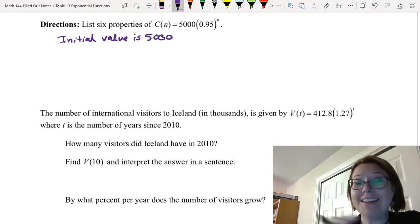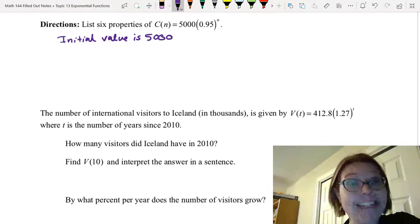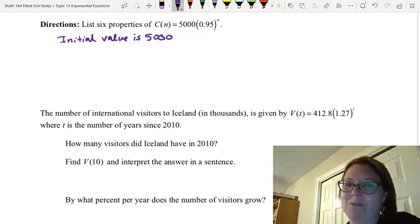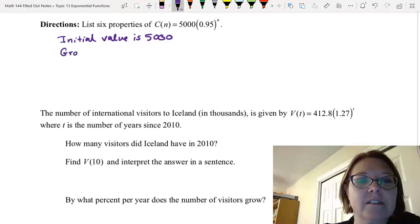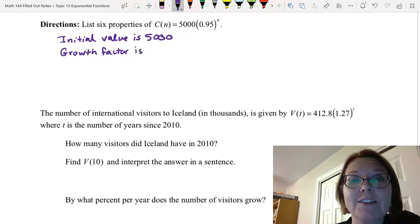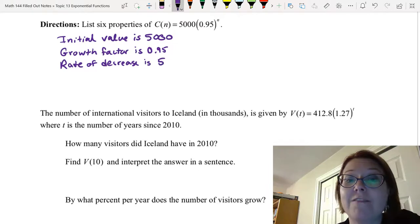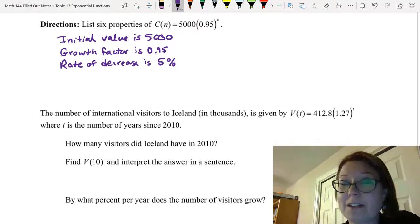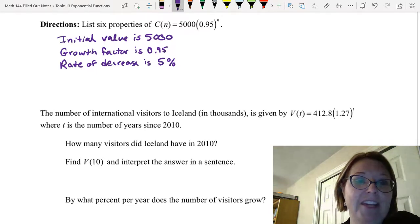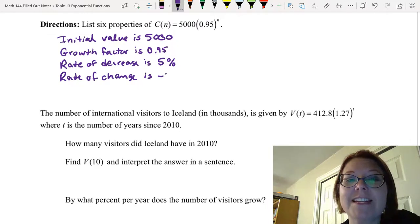So let's start with this. The initial value is 5000. Now, you don't want to just say a = 5000 because you haven't defined what a is. So you do need to say the initial value is 5000. What else do we know? Well, we know the growth factor. And again, we'll write that out. The growth factor is 0.95, which means that the rate of decrease is 5%. And I don't have to say negative 5% because I said the word decrease. If I just said the rate of change, then I would have to say is negative 5%. See the difference between those two?